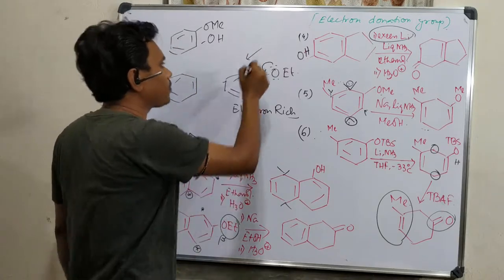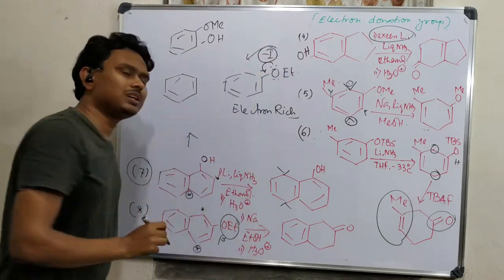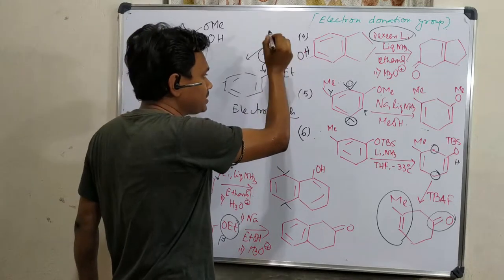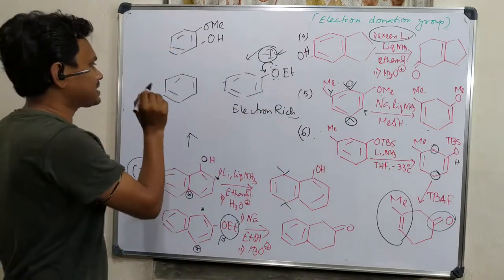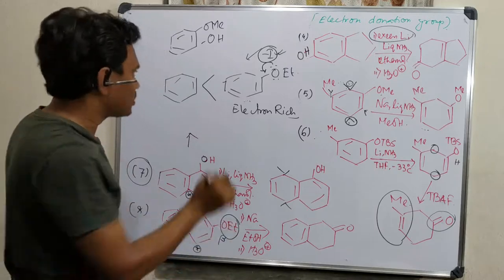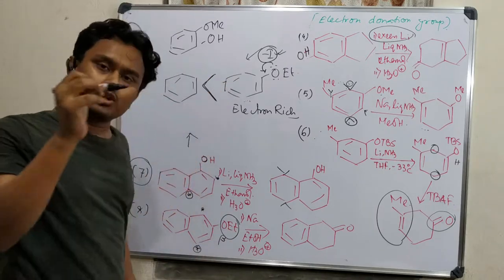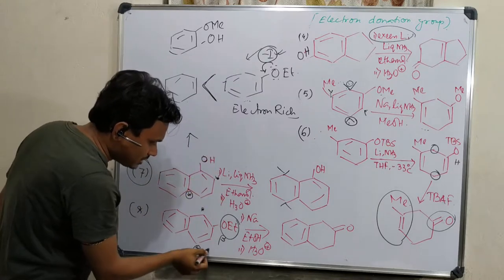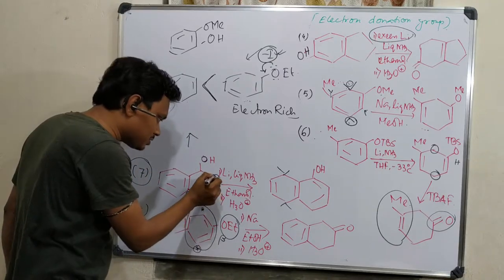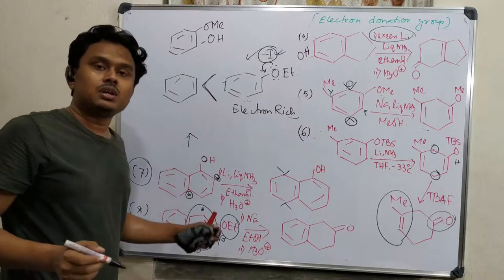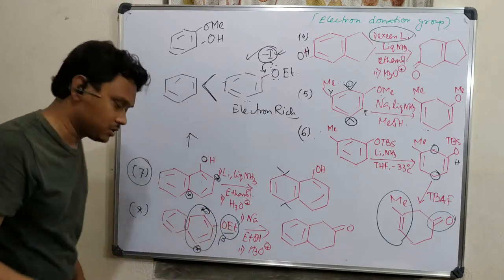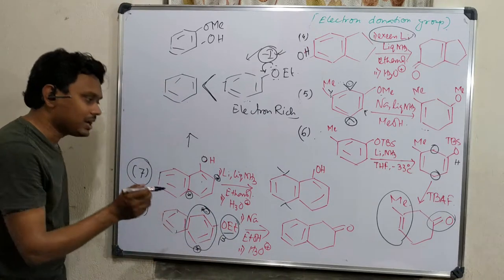Along with its electron donation, there is another property which I explained — that is minus-I. And we know that oxygen's minus-I at neutral stage — when no cationic charge is there — at that time minus-I is more dominant compared to the plus effect. Consequently, the reactivity of this phenolic ether is slightly more than benzene. So this phenolic ether is slightly more reactive compared to benzene. Consequently, reaction happens here — the main reason being that the carbanion generated at this position will be stabilized by this minus-I effect of oxygen.